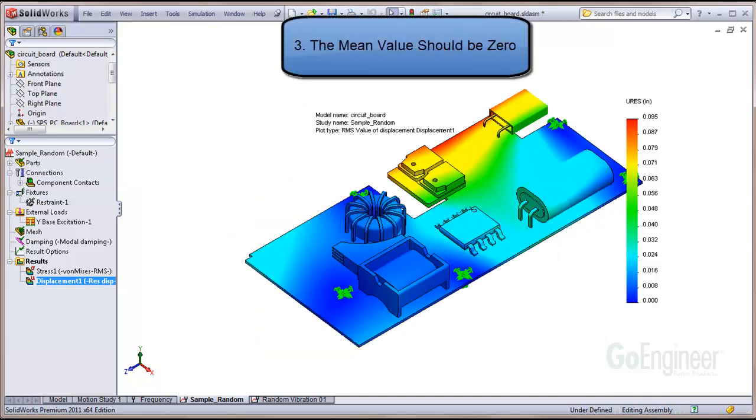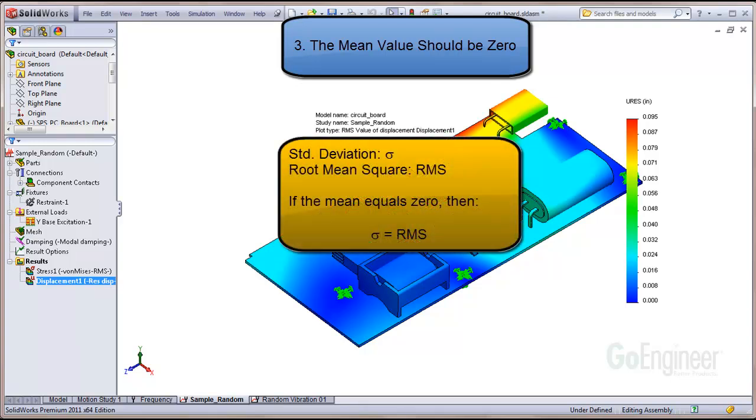The mean value is zero. For random vibration in SOLIDWORKS simulation, the mean is set to zero. For the standard deviation denoted by sigma and the root mean square as RMS, a consequence of setting the mean to zero is the standard deviation and the RMS become the same value.